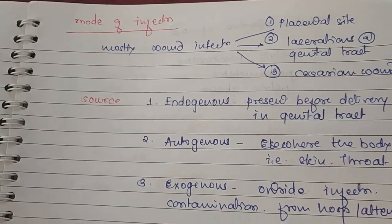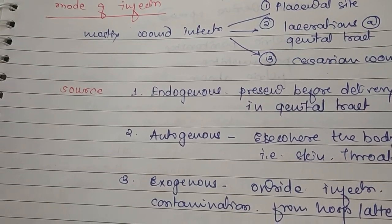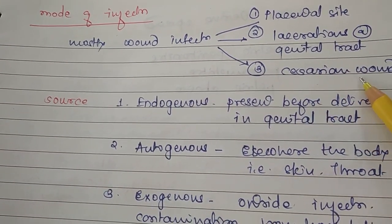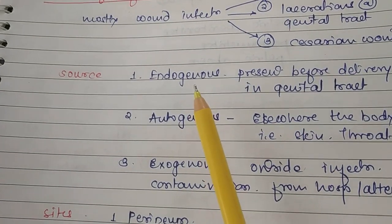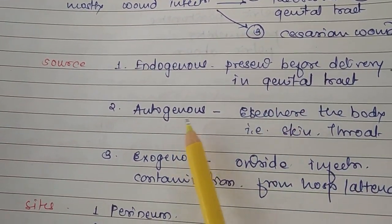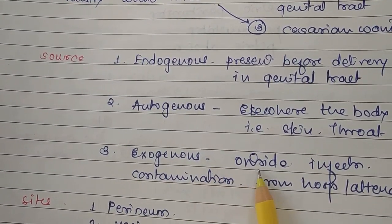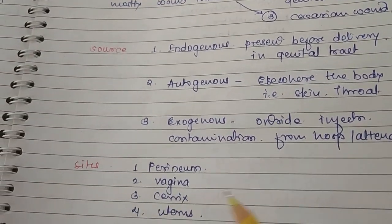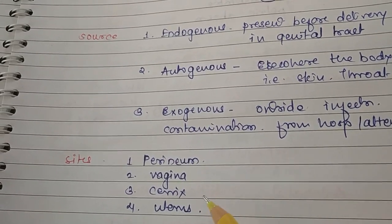The mode of infection occurs at three sites: the placental site, lacerations of the genital tract, and wounds — either caesarean or episiotomy wounds. The sources of infection are endogenous (present in the genital tract before delivery), autogenous (from elsewhere on the body such as skin or throat), and exogenous (from outside sources such as hospital contamination). The most common sites of puerperal sepsis are the perineum, vagina, cervix, and uterus.